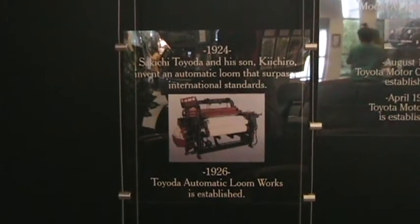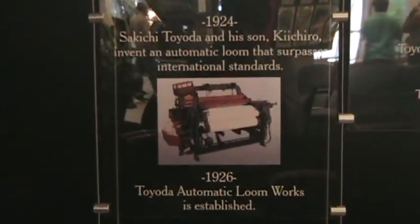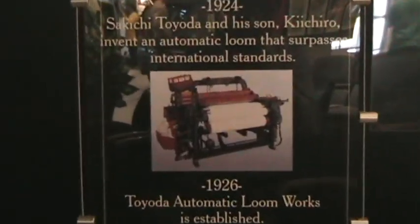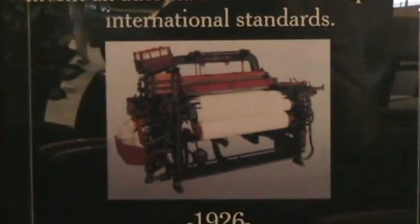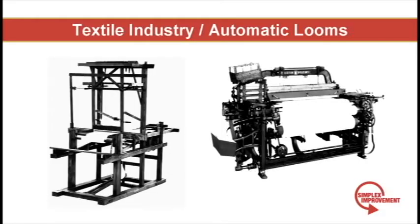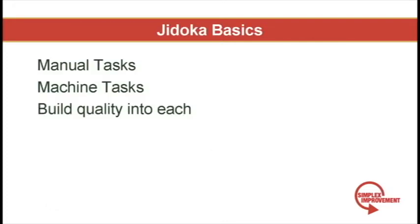Remember the looms that Toyota used in the textile industry? Intelligence was built into the machine so they would stop once they detected a thread break. This way workers were freed up to perform other meaningful tasks rather than sitting and waiting.